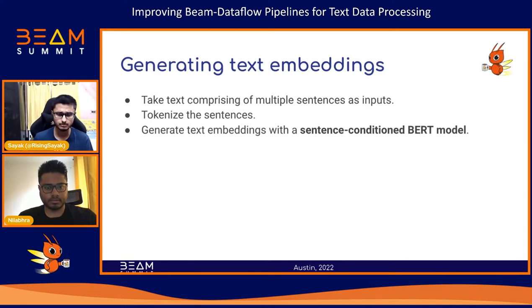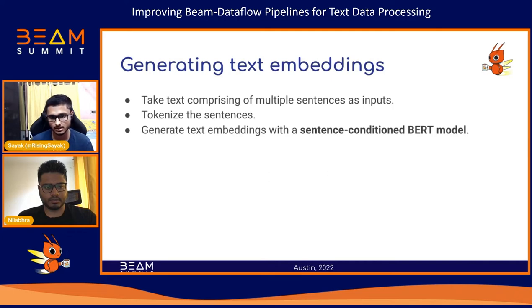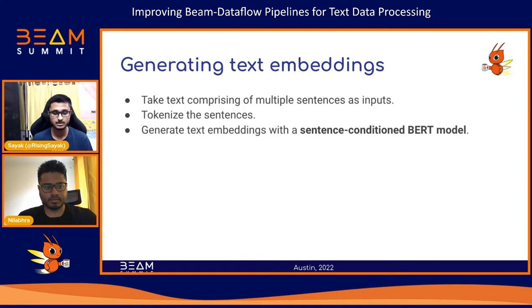As part of the pre-processing routine, we will first take each text entry — which contains multiple sentences — and tokenize it. We will then generate text embeddings with a pre-trained model. This is a fairly generic workflow for many text pre-processing problems dealing with large amounts of data. Since these operations can be applied in a row-by-row manner, we decided to use Apache Beam to orchestrate all the steps within a single pipeline, from data ingestion to data serialization.